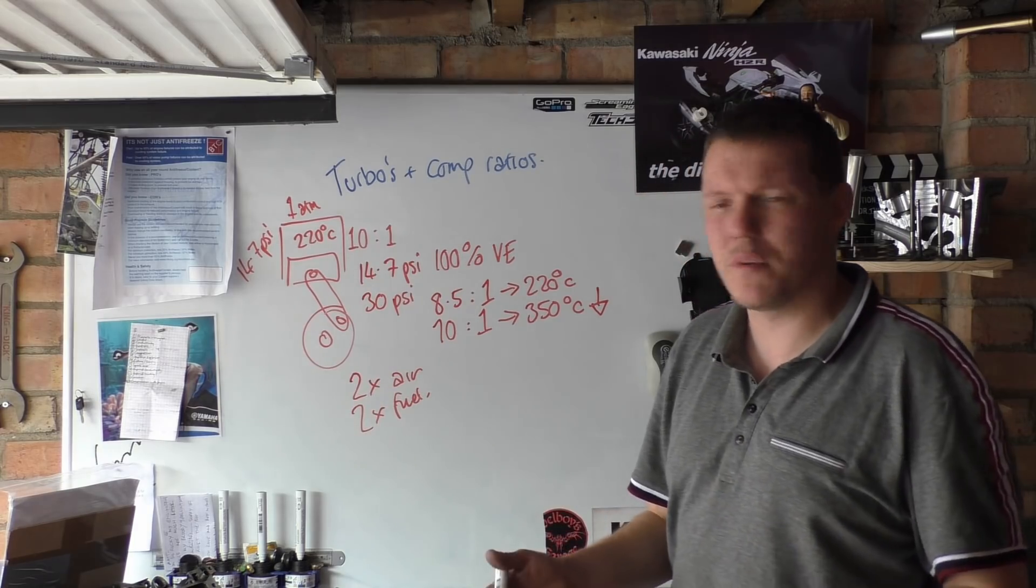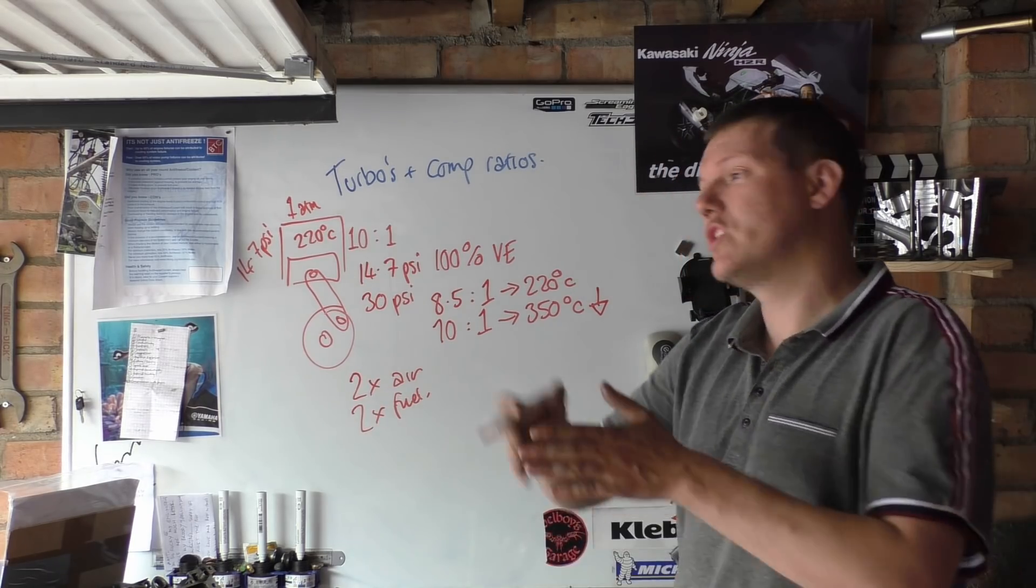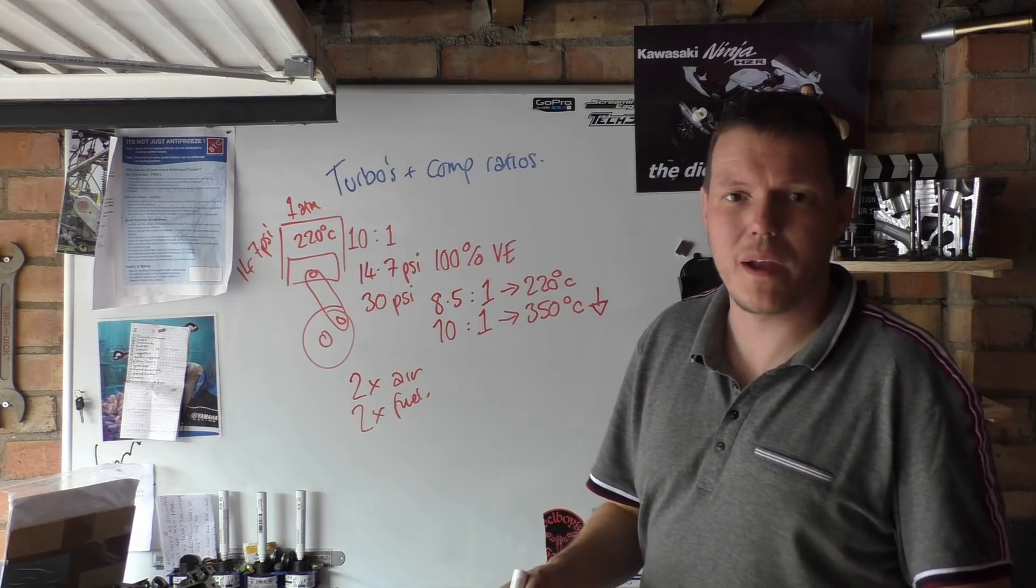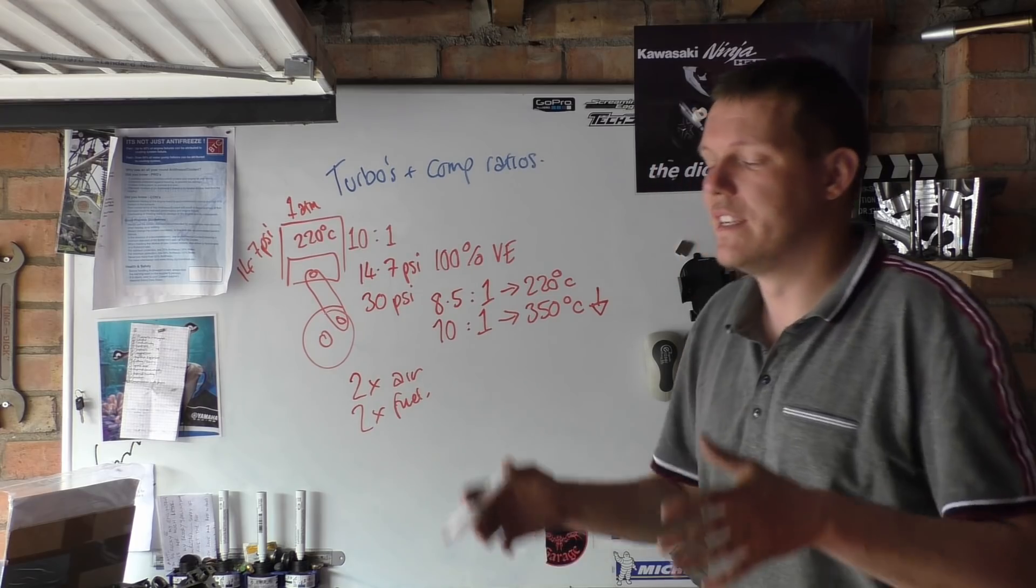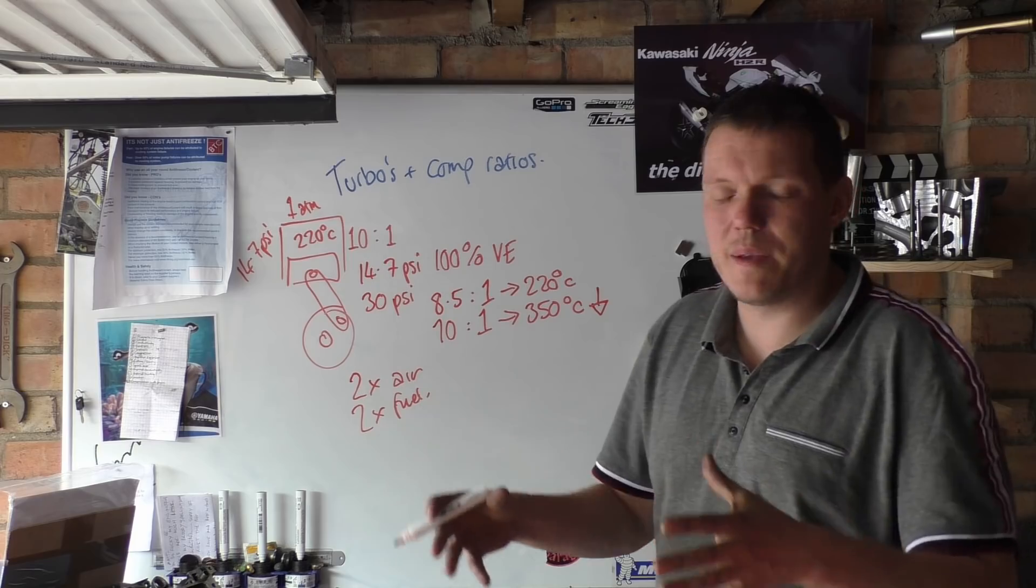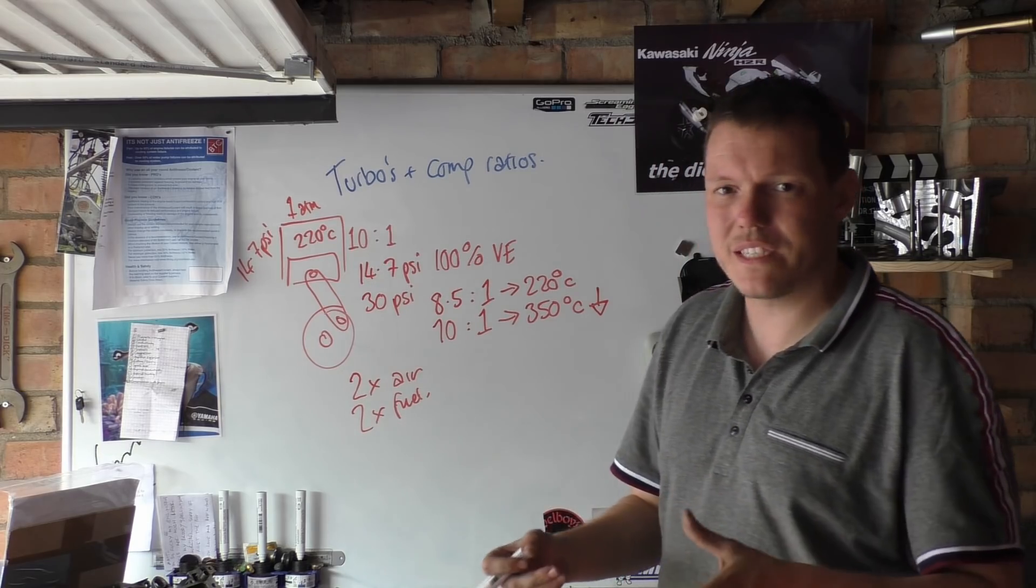This is why these cars could run higher compression ratios, which leads to more efficiency and all the rest of it. It means you can also have more power because you can compress more, which means that basically your flame front flame propagation is usually faster.